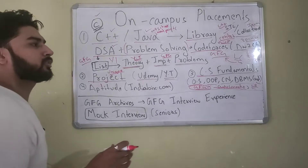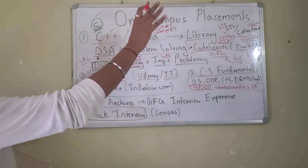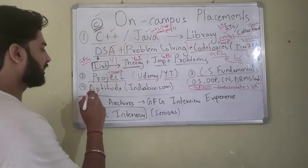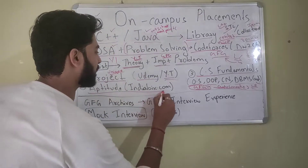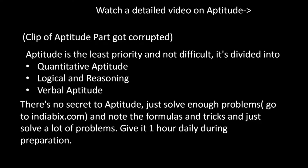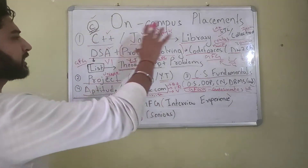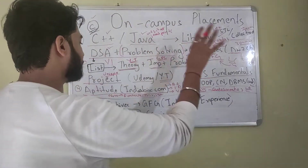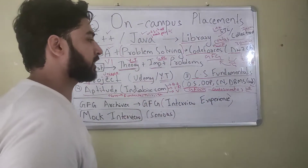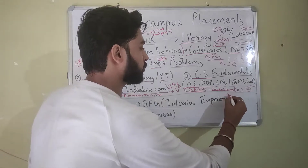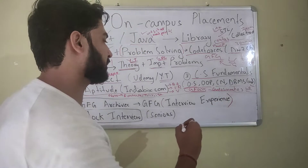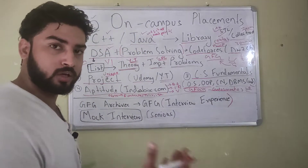The next thing in the priority list is Aptitude. Once you've done all the preparation — DSA, problem solving, projects, CS fundamentals — the next phase is execution: what to do before the interview. Suppose you have an interview with XYZ company in the next few days — here's what to actually do.